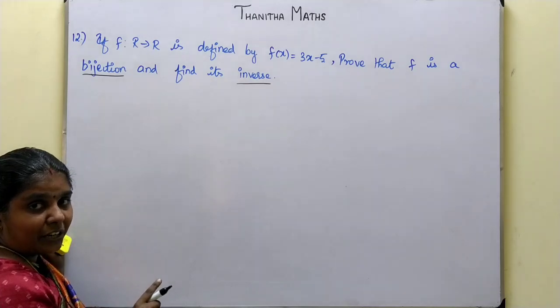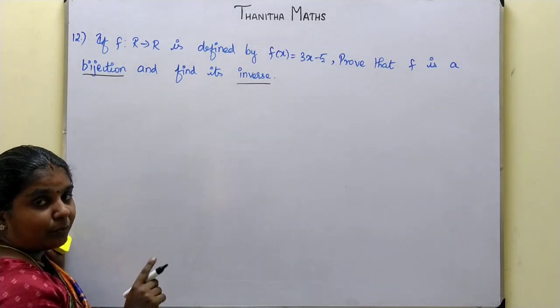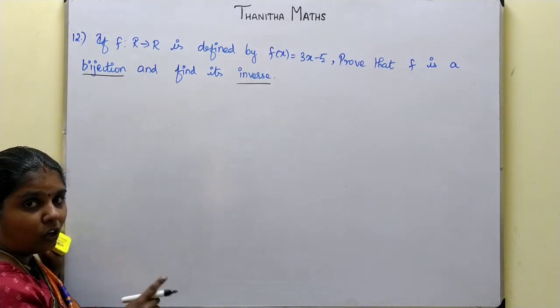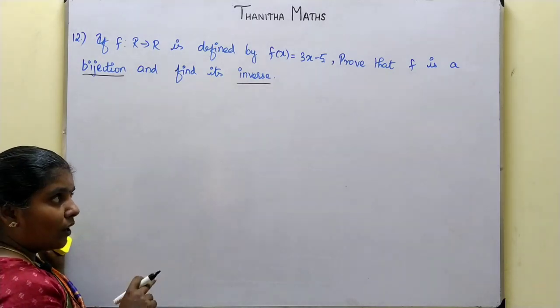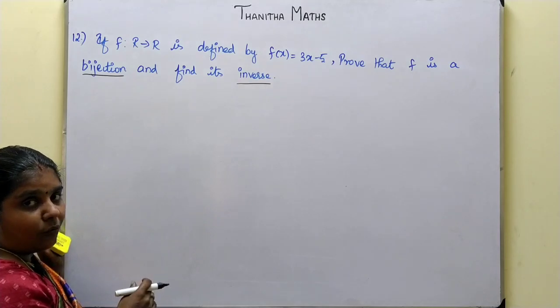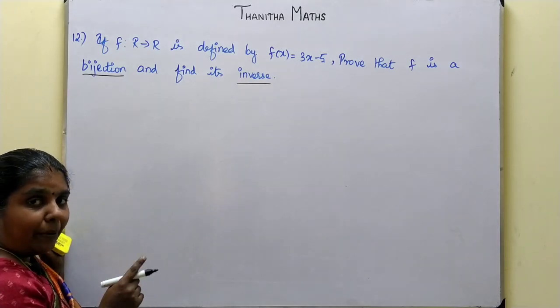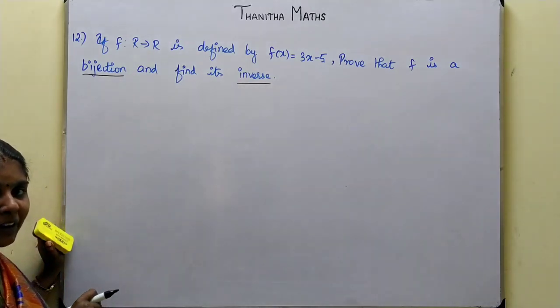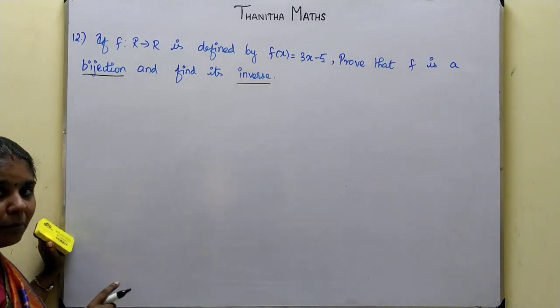One function is a bijection function. Bijection is both one-one and onto. One-one and onto are here and the inverse exists. So we have to prove that the given function is a bijection function.